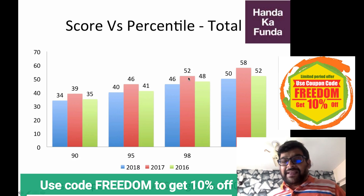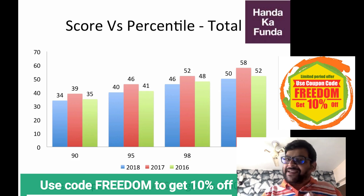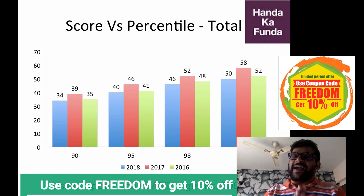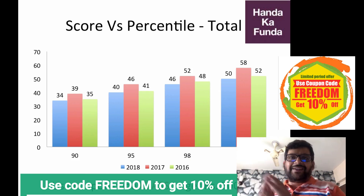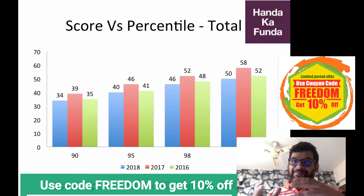2017 was a relatively easier paper where it was 52. Now, in case you don't know, typically LRDI is the toughest section and verbal is the easiest section.